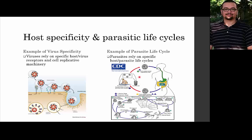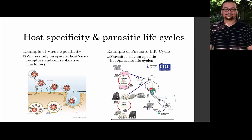Some parasites are far more complex than that simplistic Crypto lifecycle and they involve multiple hosts — pigs, rats, and humans. For this particular worm, if you were exposed to manure excreted from a pig, it wouldn't pose a threat because that stage of the life cycle is not present in the manure. It is present in the muscle tissue of the pig, and if you were to consume that tissue, that's how you would become infected and the life cycle would proceed.